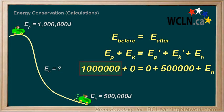So, of the 1,000,000 joules on the before side, in the form of potential energy at the top of the hill, 500,000 joules ended up being converted into kinetic energy at the bottom of the hill as it speeds along.